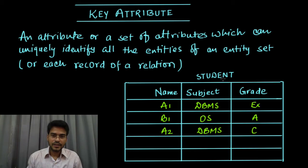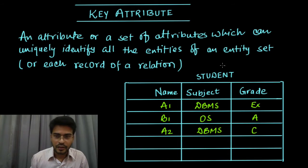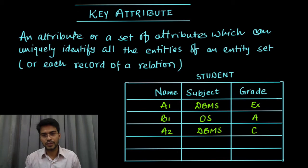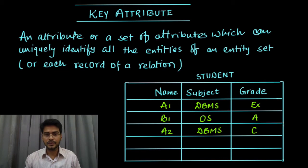We have an example here to understand. Let's say to store the information of a student, we have created a database table which has attributes name, subject, and grade. These three are dummy informations which I have already filled. Student A1 gets EX grade in subject DBMS. Similarly, B1 in OS gets A, and A2 in DBMS gets C.